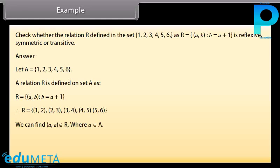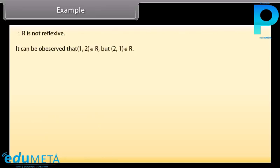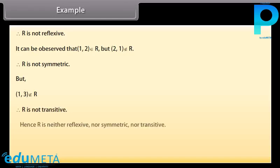We can find that (a, a) does not belong to R for any a belonging to A. For instance, (1,1), (2,2), (3,3), (4,4), (5,5), (6,6) do not belong to R. Therefore, R is not reflexive. It can be observed that (1, 2) belongs to R but (2, 1) does not belong to R. Therefore, R is not symmetric. Also, (1, 3) does not belong to R. Therefore, R is not transitive. Hence, R is neither reflexive, nor symmetric, nor transitive.